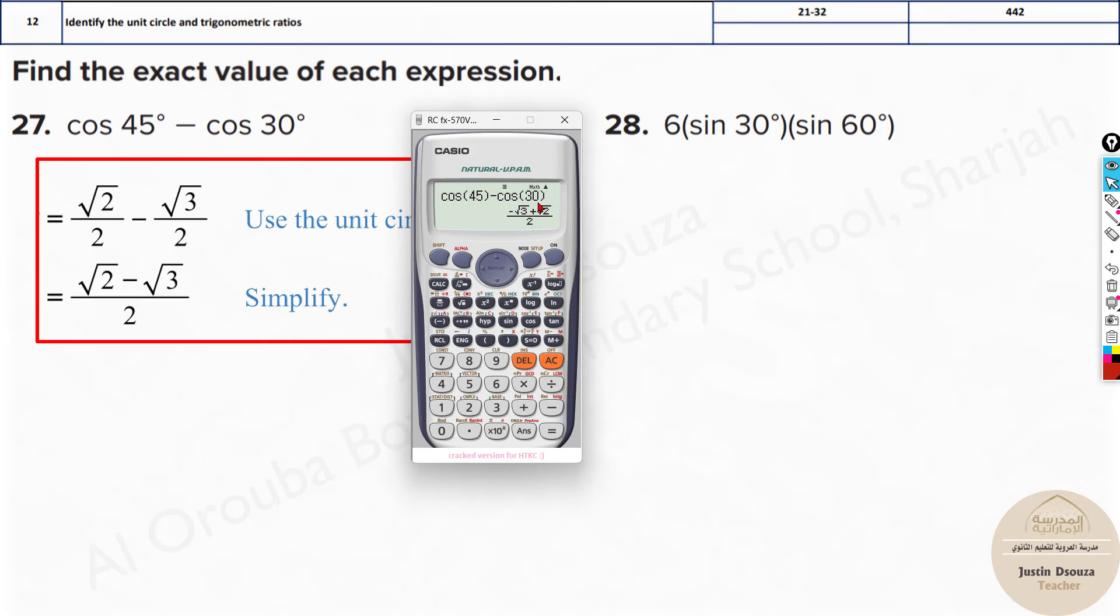Here sometimes this changes. See now first is written as root 2 minus root 3 by 2. That is same. You know this is same. If you distribute, you will get the same answer from both.